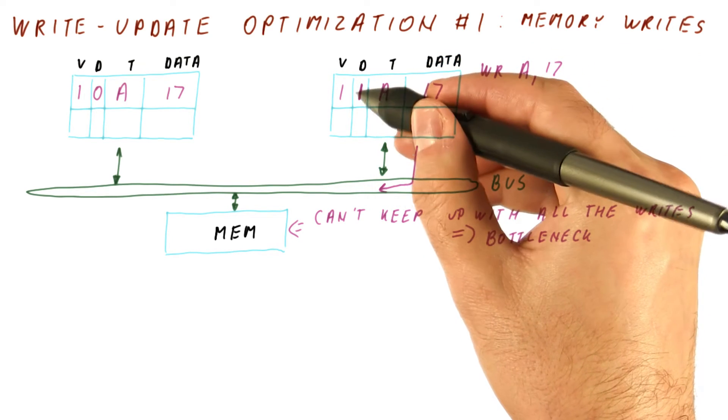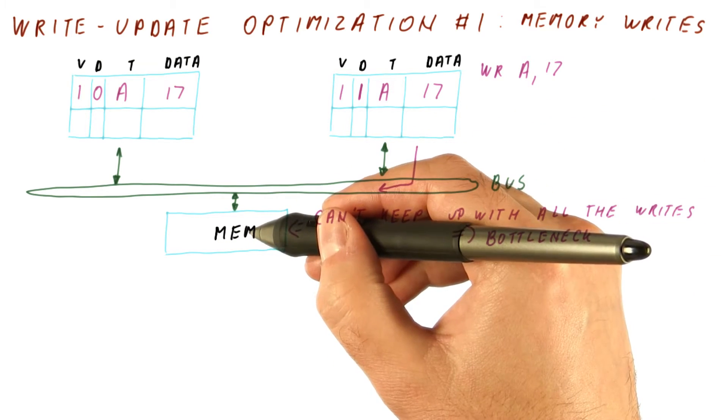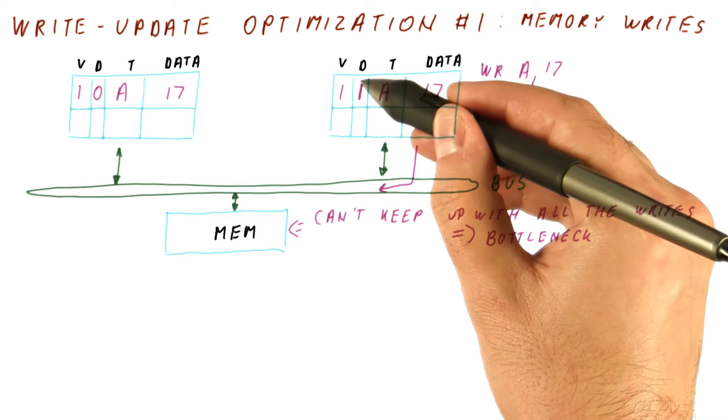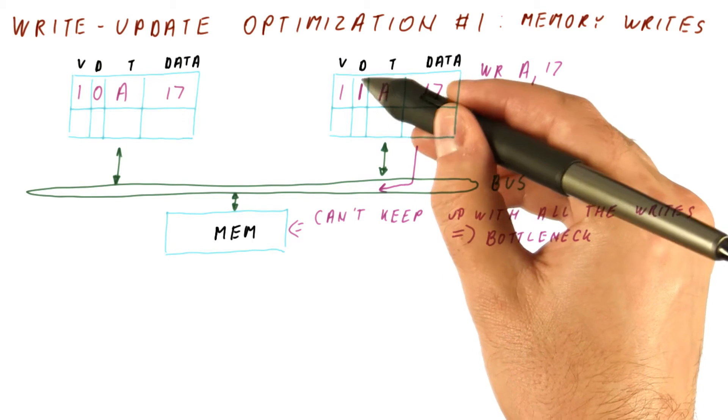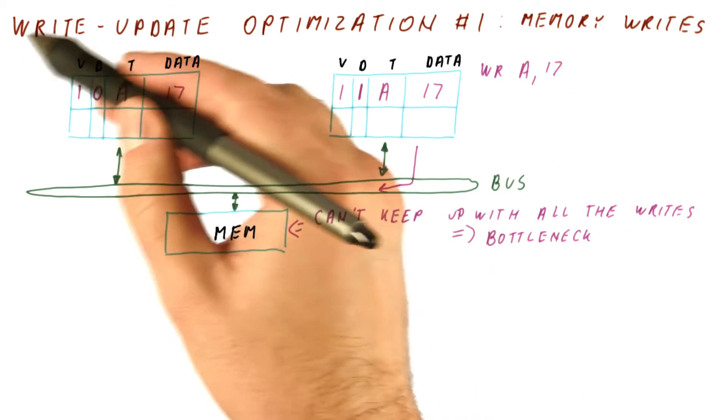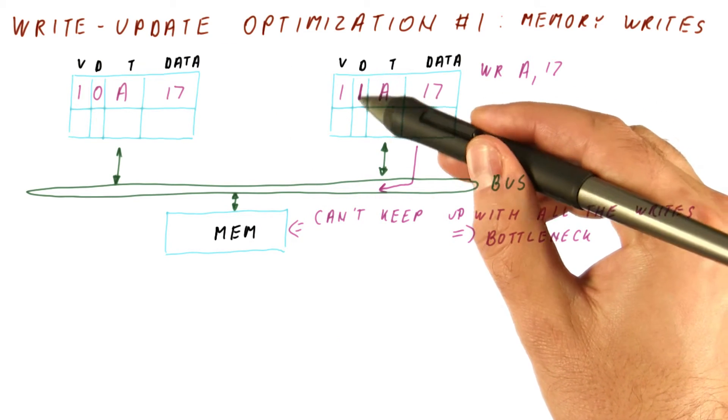Dirty means two things here. One is that the memory is not up to date and we need to update it. This is exactly the same as in a normal uniprocessor write-back cache. If we replace something dirty, we have to send a write-back to memory. In a write-update protocol, dirty has another meaning that we will now illustrate.